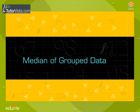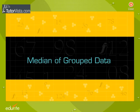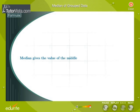Median of Grouped Data. Median is a measure of central tendency which gives the value of the middle-most observation in the data.